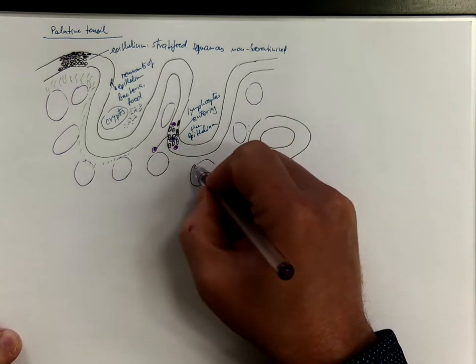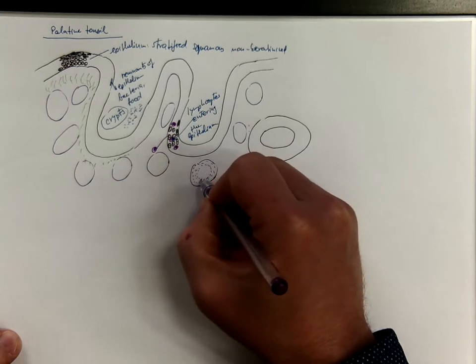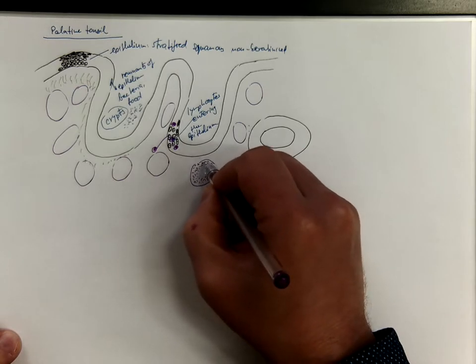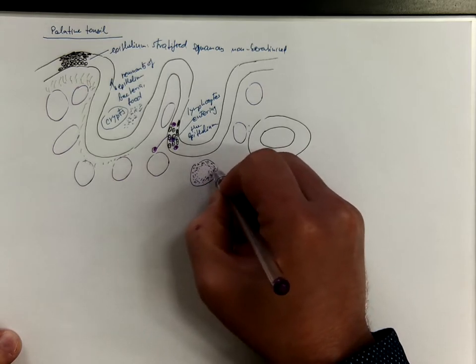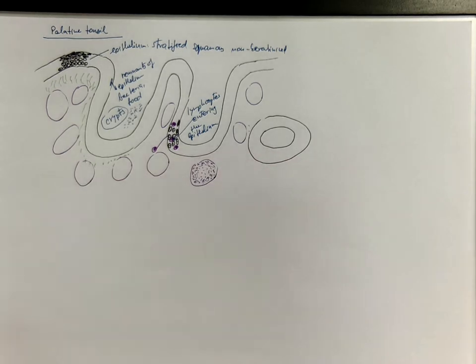These follicles have a mantle zone and those that are activated and the immune response is occurring right now, they have a more pale germinal center.